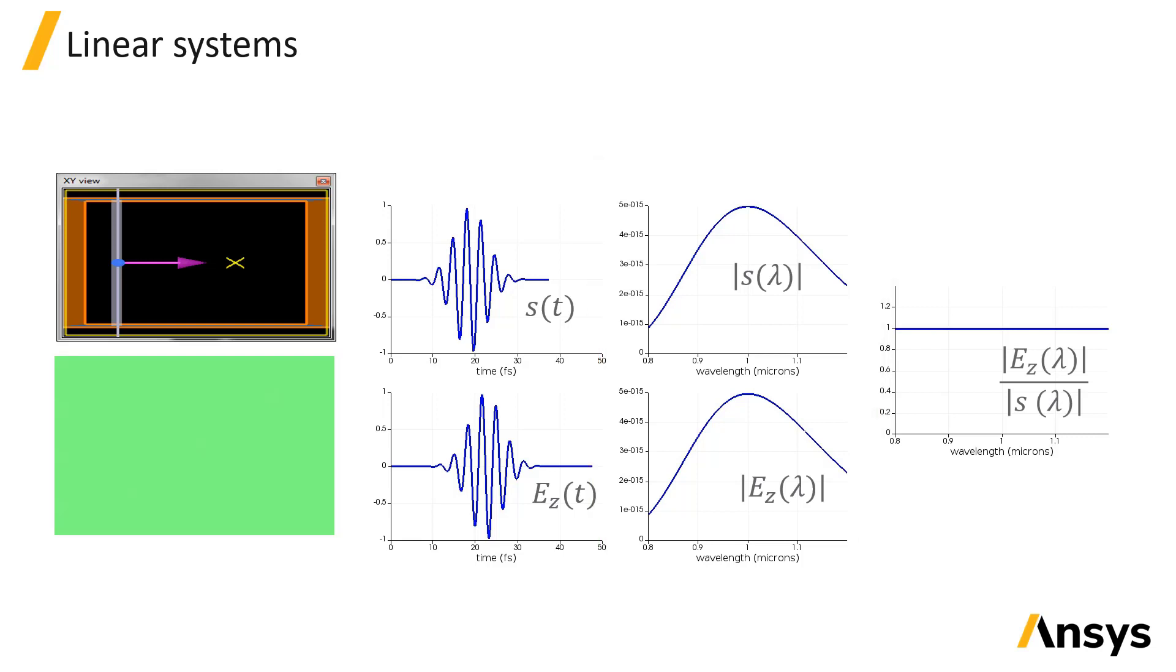When we normalize the electric field to the source pulse in the frequency domain, we can see that the electric field is unity for all wavelengths. This is exactly what we would expect for a plane wave of unit amplitude propagating in free space. While it is not plotted here, the phase of the normalized electric field is equal to k times l, where k is the wave number and l is the distance from the source to the monitor that recorded the field.